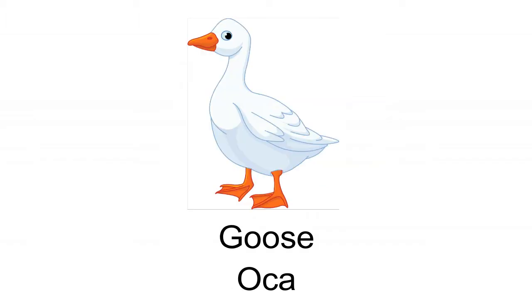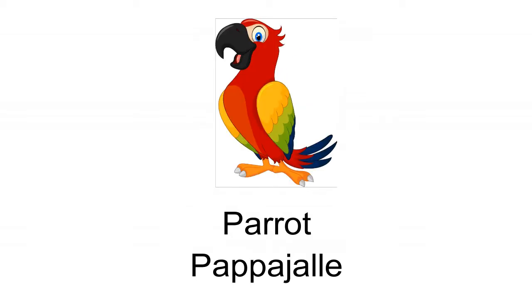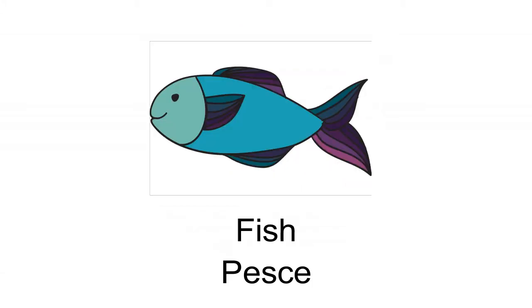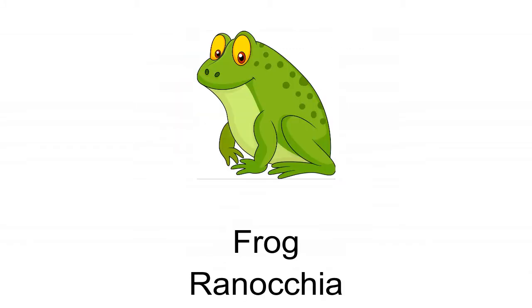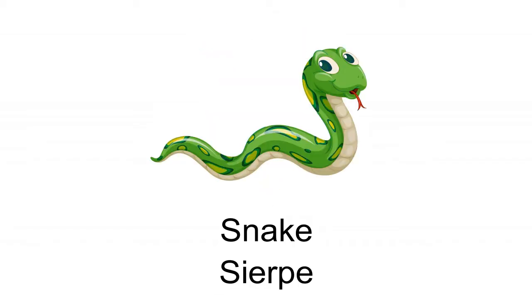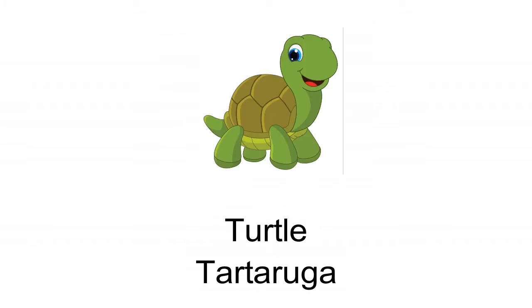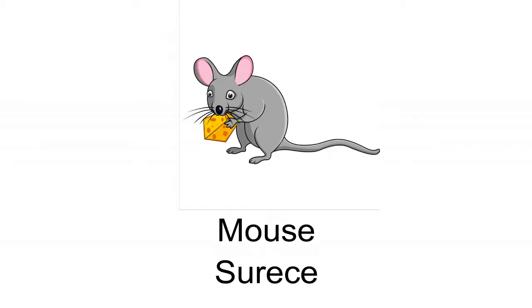Lizard — Lacertola. Fly — Mosca. Pig — Porco. Cow — Vacca. Goose — Oca. Bear — Orso. Parrot — Pappagallo. Sheep — Pecora. Fish — Pesce. Spider — Ragno. Frog — Ranocchio. Monkey — Scimmia. Snake — Serpe. Shark — Squalo. Turtle — Tartaruga. Tiger — Tigre. Mouse — Topo.